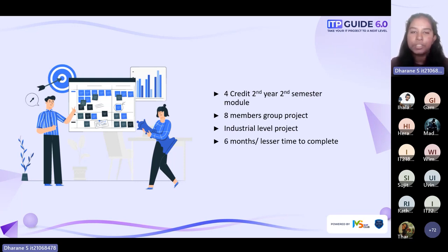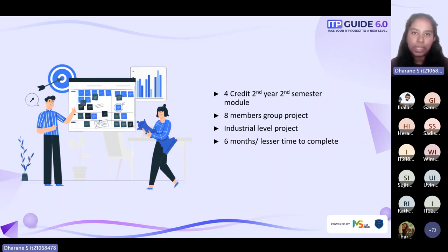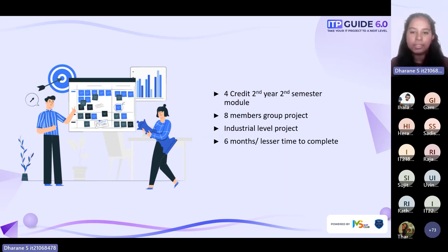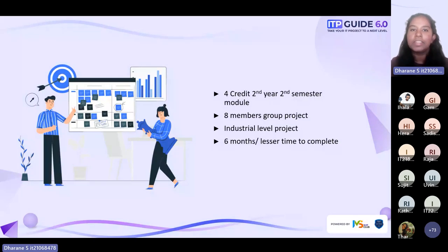ITP is an eight-member group project. This is going to be the first time you will be working in an eight-member team. This is one of the largest projects you do before your fourth-year research project. It is actually an industry-level project, so you will get hands-on experience at an industry level even before you move into the industry. If we consider the time limit, you will get approximately six months, but most probably it will be less than that, so you have to complete your project within the given time.